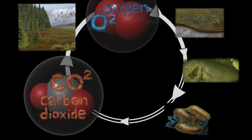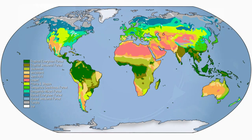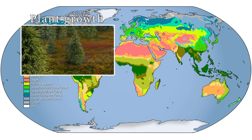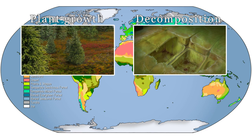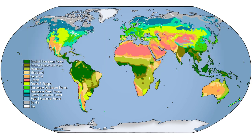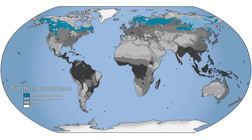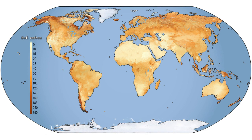Decomposition of soil carbon is critical to the global carbon cycle and atmospheric CO2 concentrations. Soil carbon content varies between ecosystems due to the balance between plant growth and decomposition rates. Until recently, the colder temperatures of the northern ecosystems produced an environment in which the decomposition of carbon-rich plant litter had been slower than plant growth, resulting in large accumulations of soil organic carbon.